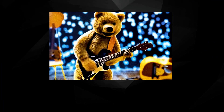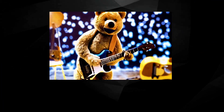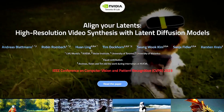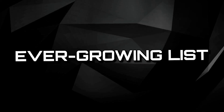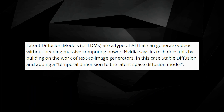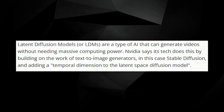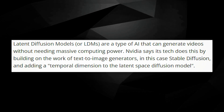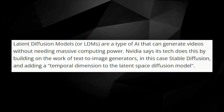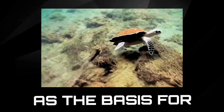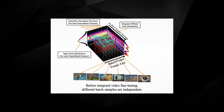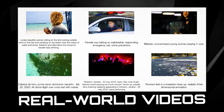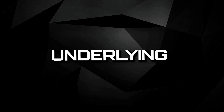NVIDIA has just shown off some impressive demos of the technology that could soon take your GIFs to a new level. A new research paper and microsite from NVIDIA's Toronto AI Lab called High-Resolution Video Synthesis with Latent Diffusion Models gives us a taste of the incredible video creation tools about to join the ever-growing list of the best AI generators. Latent Diffusion Models, or LDMs, are a type of AI that can generate videos without needing massive computing power. NVIDIA says its tech does this by building on text-to-image generators — in this case, Stable Diffusion — and adding a temporal dimension to the latent space diffusion model. By using Stable Diffusion as the basis, the team does not have to train a new model from scratch, but can take advantage of existing skills and methods. For example, although the WebVid-10M dataset used contains real-world videos, the model can also generate art videos thanks to the underlying Stable Diffusion model.